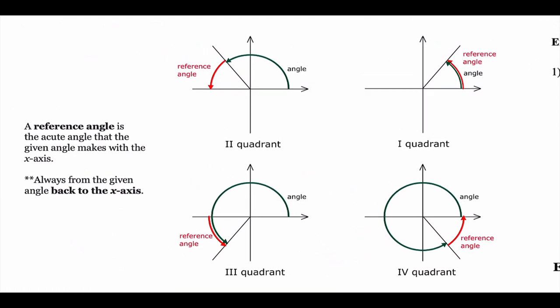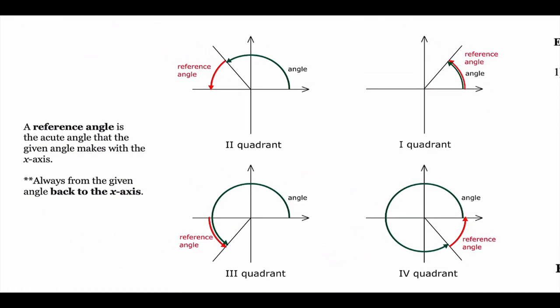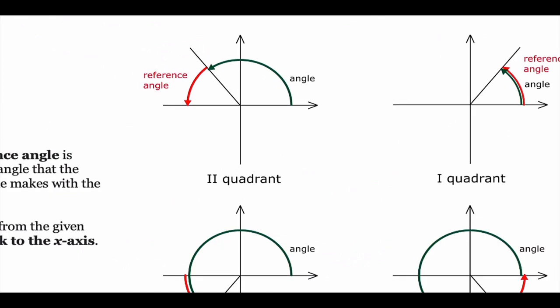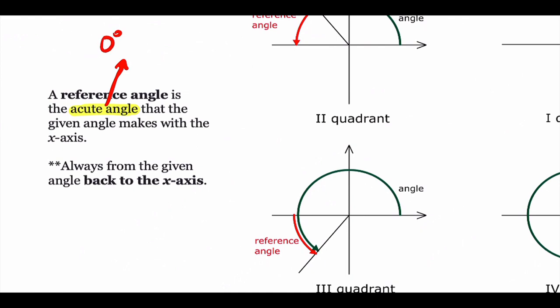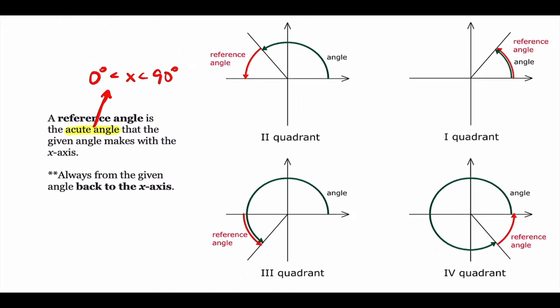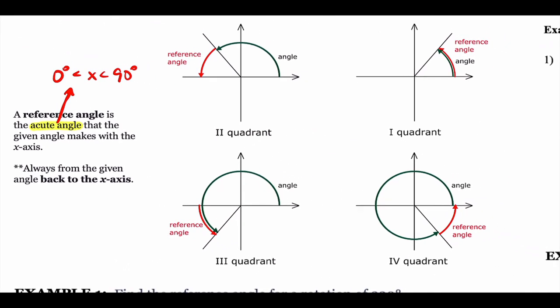The next thing is something called a reference angle. A reference angle is always acute, so it's always going to be between zero degrees and 90 degrees — never zero, never 90, never negative, and never over 90. Reference angles depend on which quadrant you're in. There are four quadrants. If you're in quadrant one, the reference angle is the same as the regular angle — whatever the regular angle is, that's the reference angle. That one's easy.